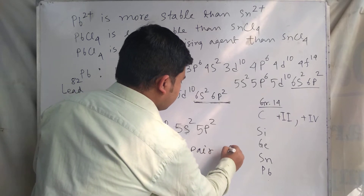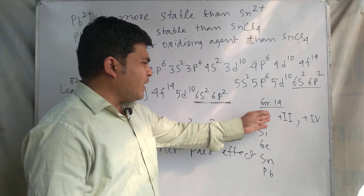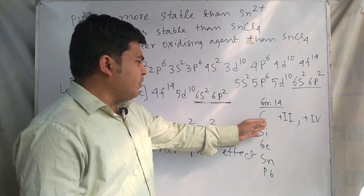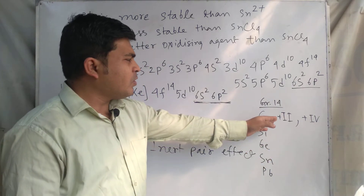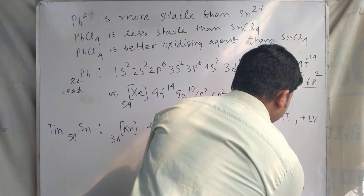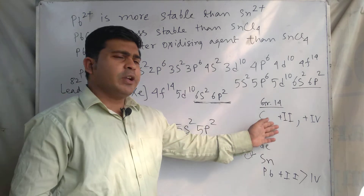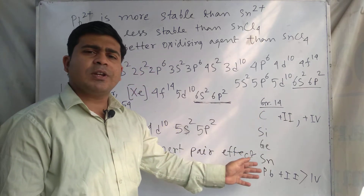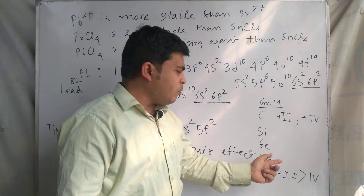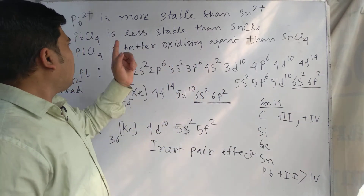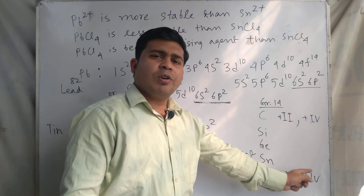As we go down Group 14, the elements show a more stable +2 oxidation state. The +2 oxidation state of lead is more stable than its +4 oxidation state. As we go down Group 14, the stability of the +2 oxidation state increases, which is why Pb²⁺ is more stable. Consequently, Pb⁴⁺ is less stable, and lead(IV) chloride (PbCl₄) is less stable as well.